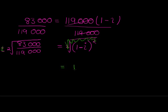But we did get rid of the square root. So that all I have now is 1 minus I is equal to the square root of 83 over 119. Those zeros will just cancel. Technically not really the zeros cancelling. But you know what I mean.